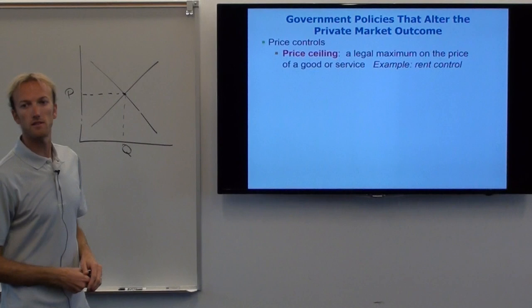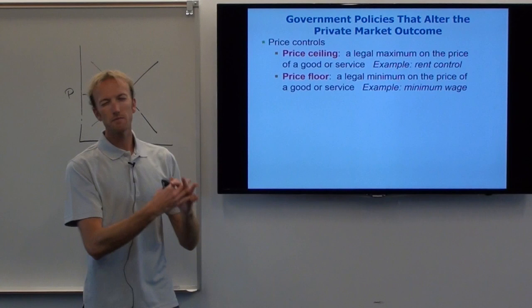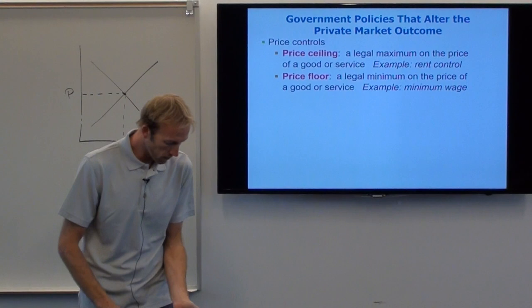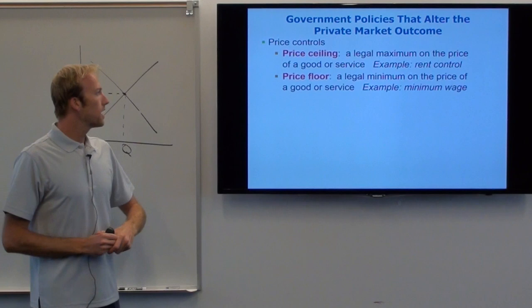The other thing they can do is a price floor, which is much more common. This is where the government says there's a floor — the price can be up above the floor, but it can't be below the floor. Just like this floor: I can be above the floor but not below it.